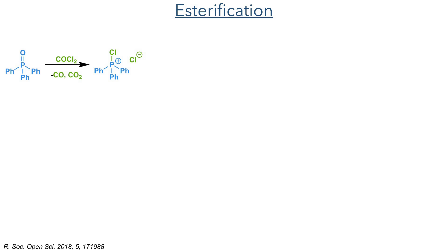This reaction proved to be quite challenging, as the alpha proton of fragment 1 is quite acidic and the enone system of fragment 2 is very susceptible to Michael addition. Because of this, the common methods to form esters all failed. But the group was able to develop a method that used triphenylphosphine oxide and oxalyl chloride to successfully form the ester.